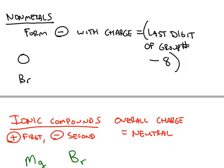Non-metals form an anion that has the charge equal to the last digit of the group number minus 8. And when you look on the periodic table, you'll see that all non-metals are in the main group on the periodic table.